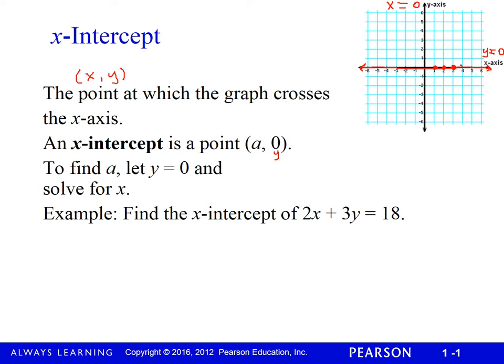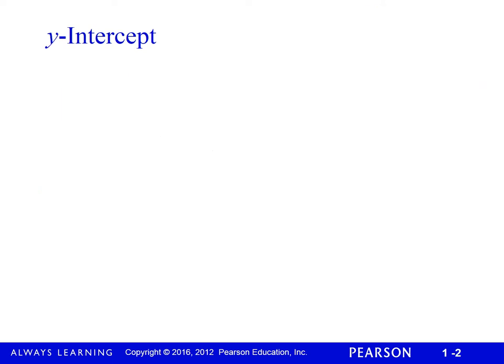To get a y-intercept, set x = 0 and solve for y. Example: find the x-intercept of 2x + 3y = 18. We let y = 0 and solve for x. Then 2x = 18, divide both sides by 2, x = 9. So (9, 0) is the x-intercept.